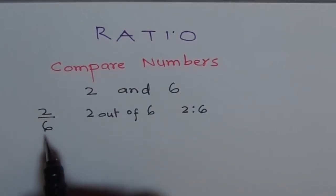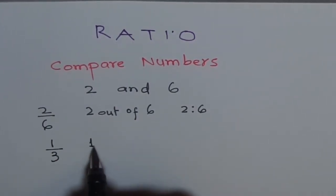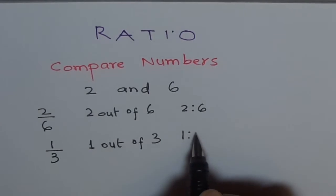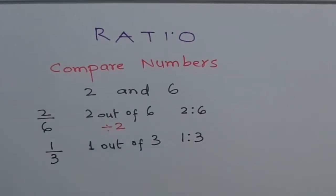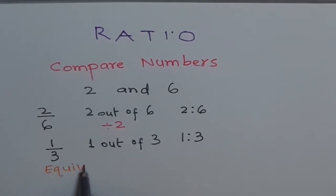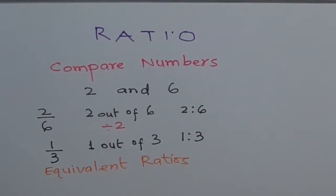Now you also see that there is a common factor of 2 here. So sometimes we can simplify our ratios. We may say 2 out of 6 is same as 1 out of 3, or 1 over 3, or 1 out of 3. And in ratios we write it as 1 is to 3. So what did we do here? We just divided everything by 2. If we do that, we get the same ratio. And what these ratios are called? These ratios are called equivalent ratios.